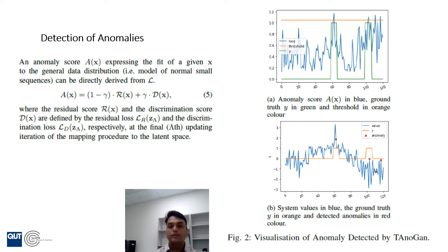In the second figure, the blue line shows the original time series data. The orange line shows the ground truth anomalies, and the dot points show the identified anomalies. Even though there are two false positives, when we closely analyze them, we can see that these two points are quite different from the general data distribution.